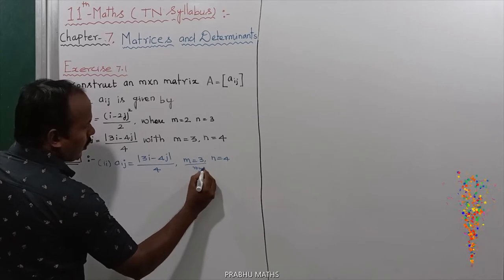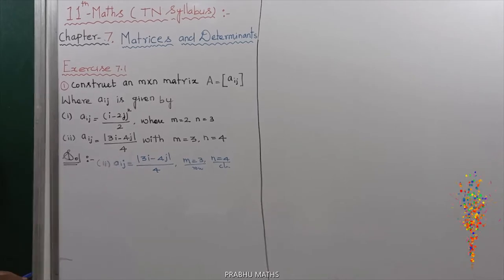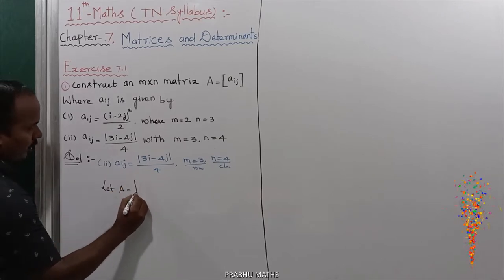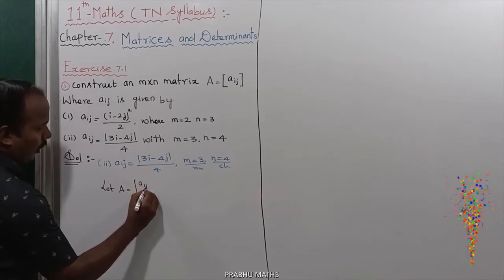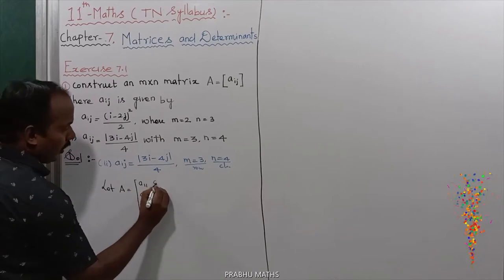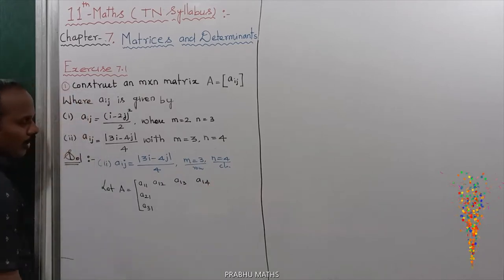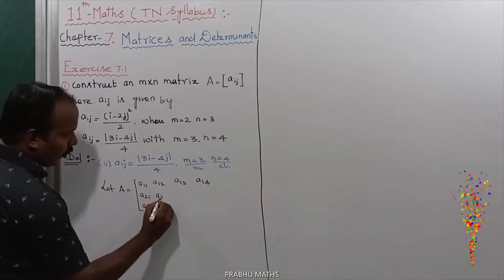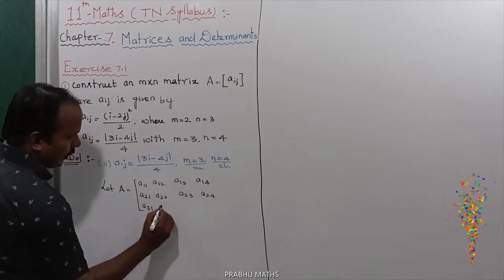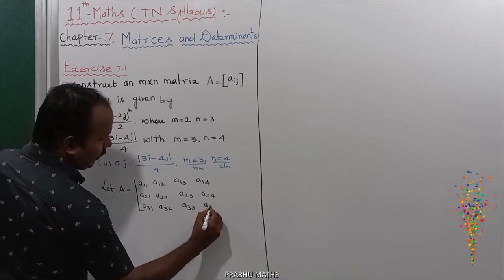So this is a matrix with 3 rows and 4 columns. Let's construct the matrix values. Consider A equal to 3 rows and 4 columns, with entries A11, A21, A31 for rows and A12, A13, A14 for columns. Next entries: A22, A23, A24, A32, A33, A34.